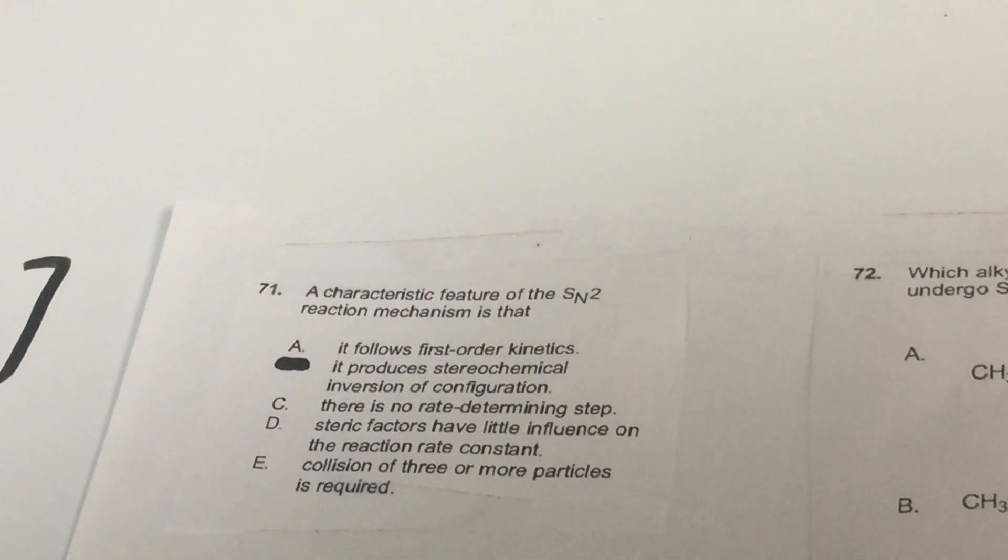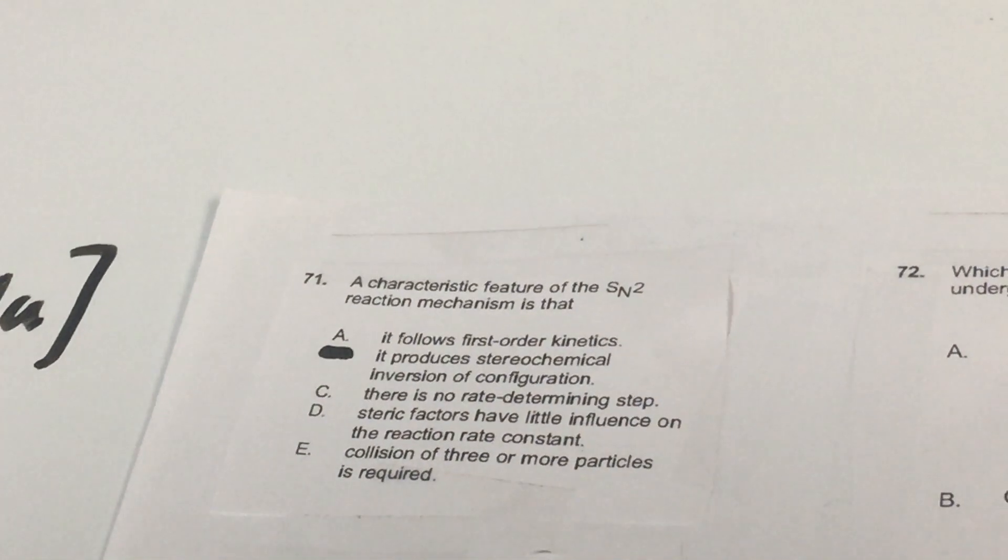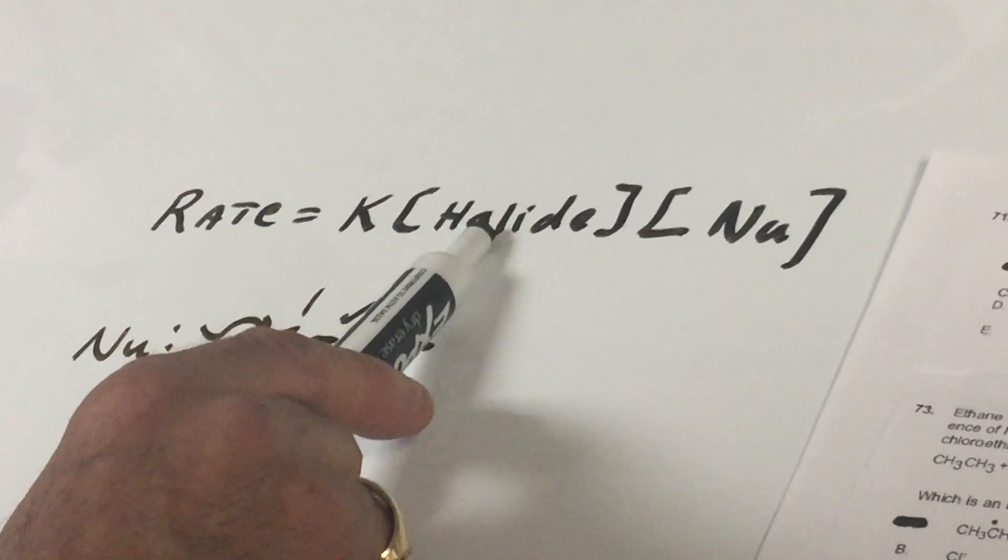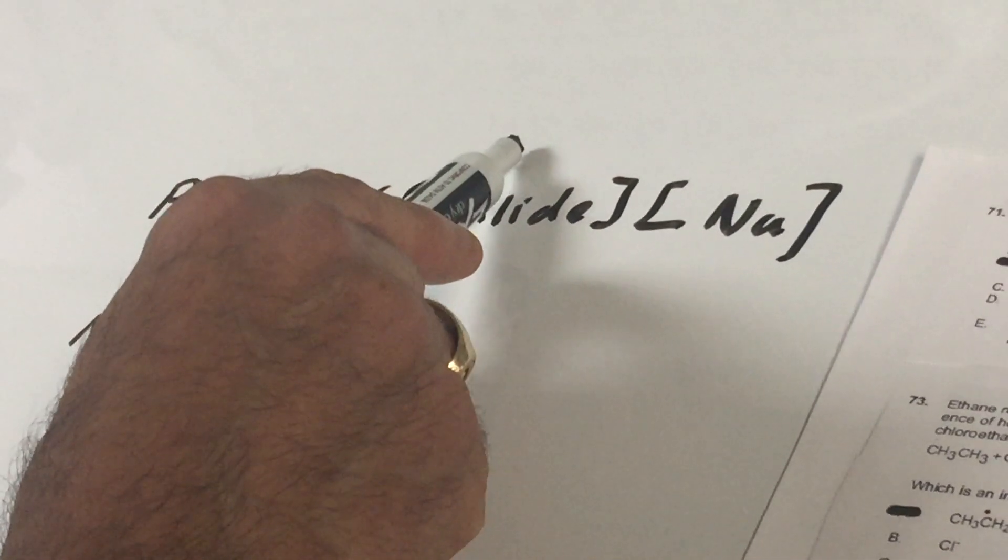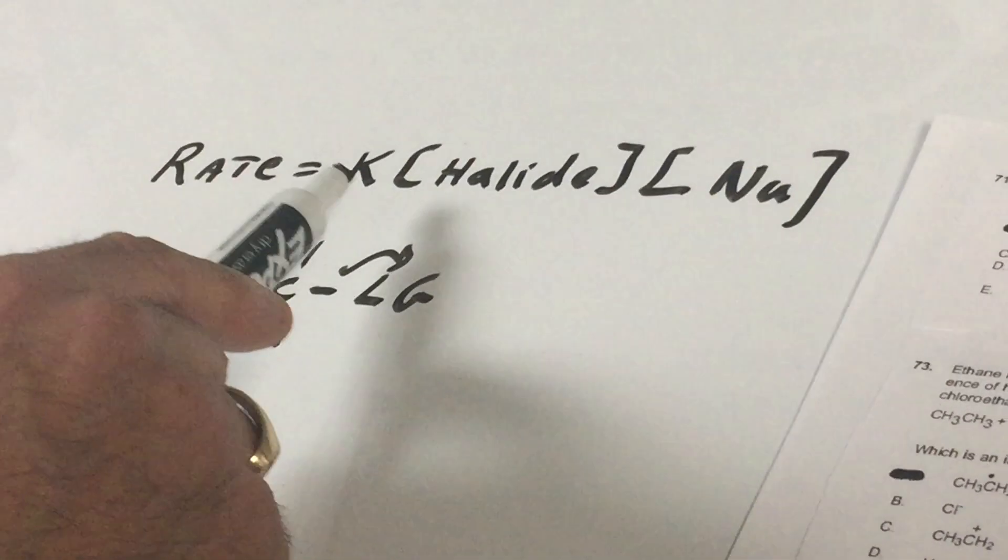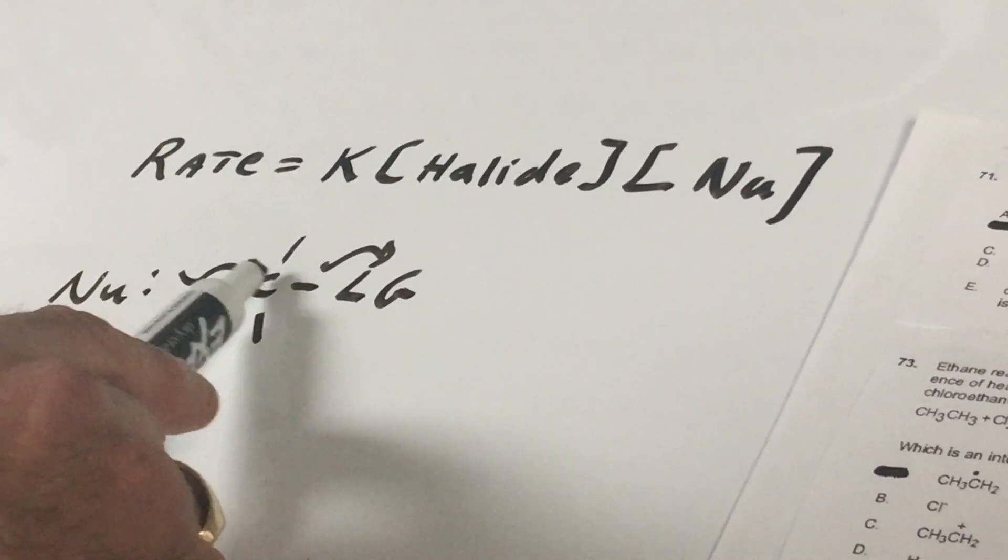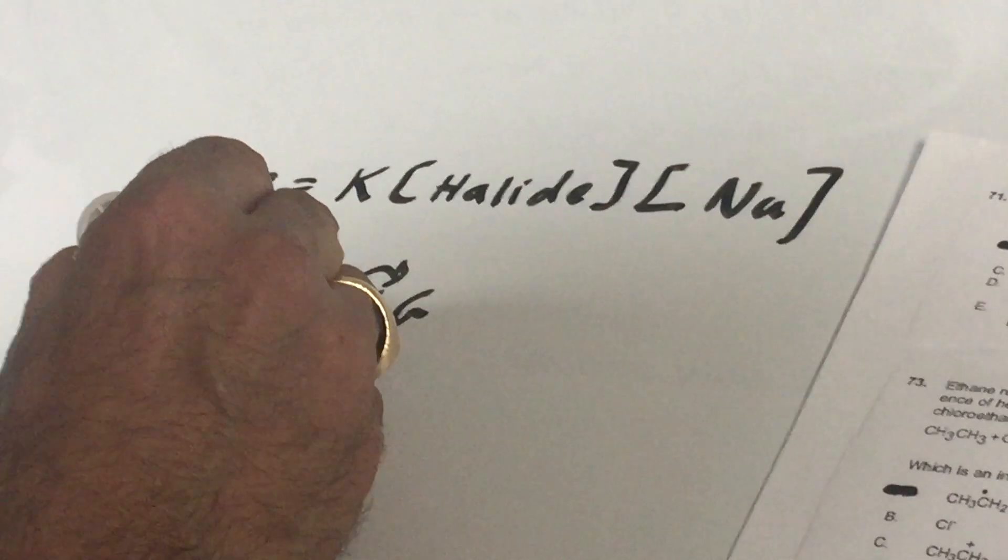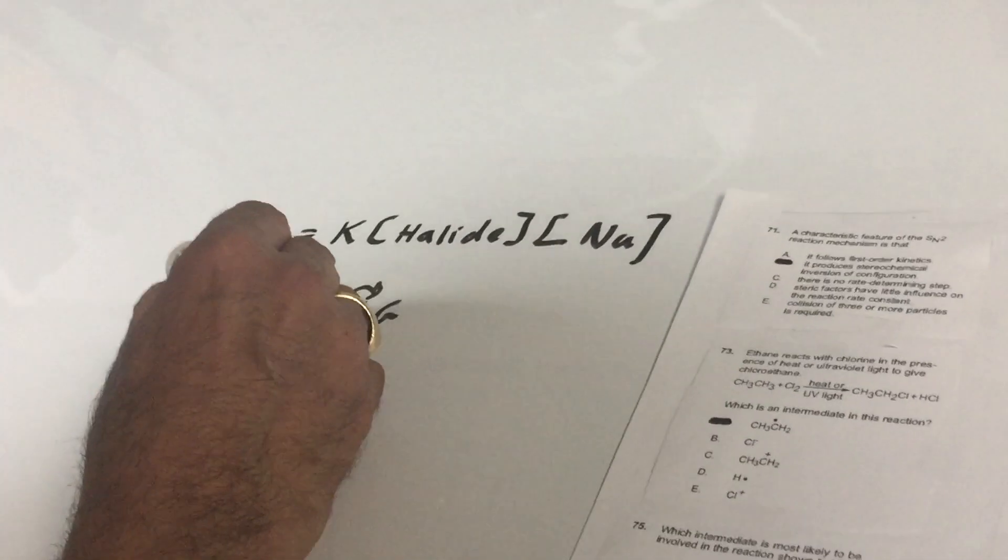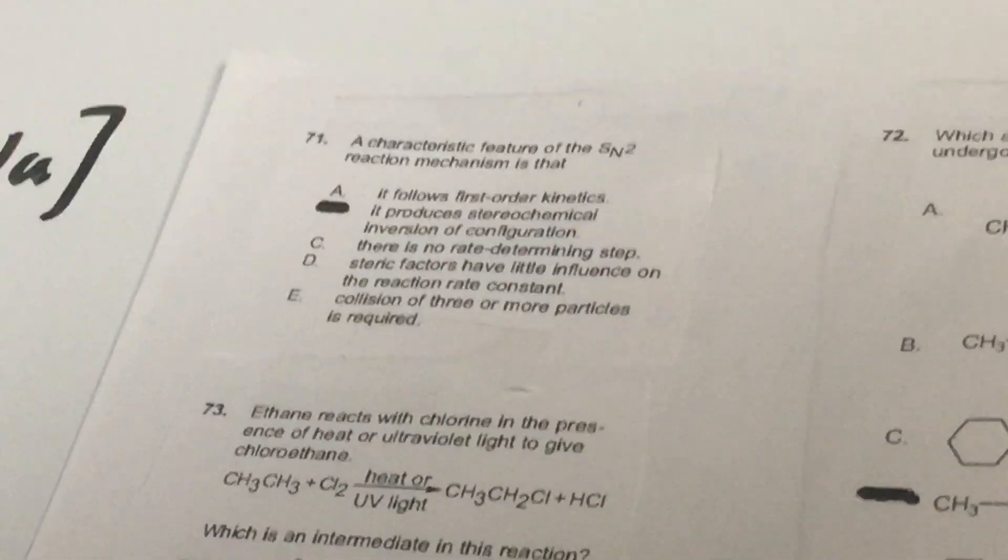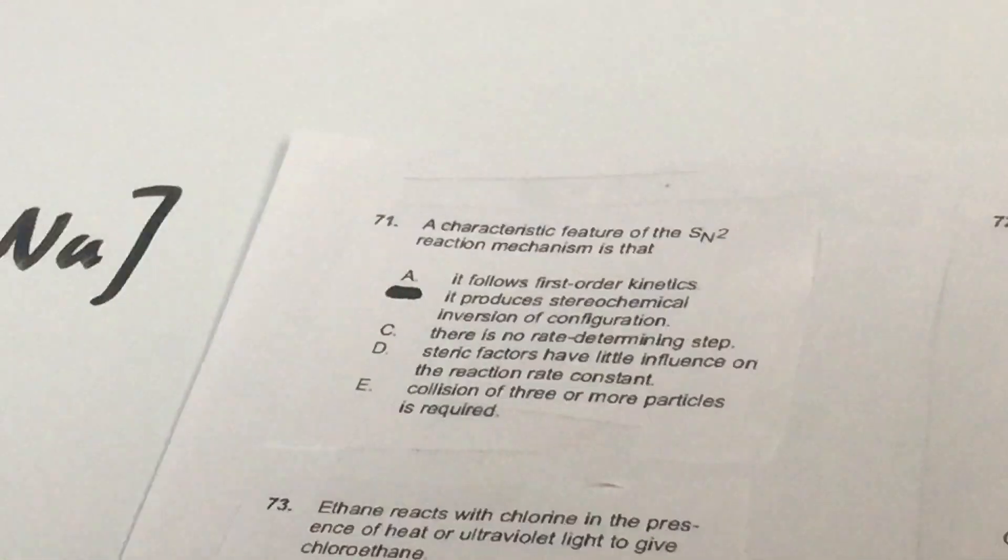Okay the first question was number 71, it says here a characteristic feature of the SN2 reaction mechanism is. First of all before we do anything I wrote you a little note that the rate of an SN2 reaction depends on two things, the halide and the nucleophile. So if you want to say triple this and double this, the rate would go up by six. And if you remembered whenever we do an SN2 the nucleophile attacks from the backside. As you can see the leaving group is here, the nucleophile is here and right here would be the antibonding orbital. So we are putting electrons in that antibonding orbital and that is ejecting the leaving group.